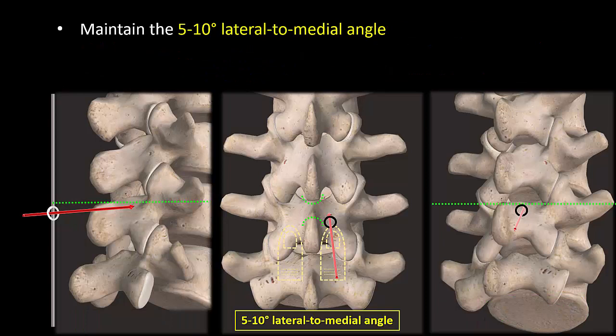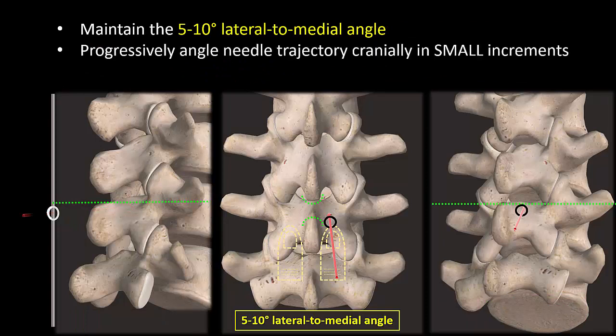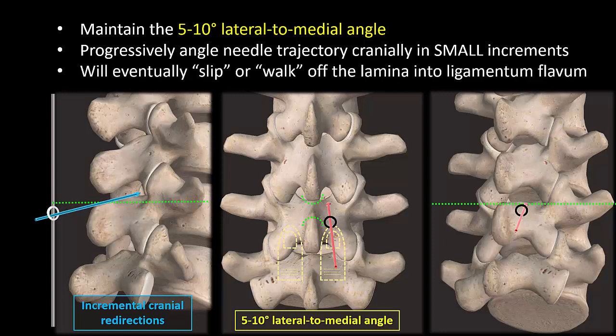The needle should be redirected in small increments, gradually increasing the cranial angle but maintaining the same lateral to medial angle. The needle tip will continue to make bony contact with the lamina, which feels like you are walking the needle tip up a wall — contact is always at the same depth. Eventually the needle walks off the edge of the lamina and slips into the interlaminar space. This is signaled by an ability to advance the needle deeper than during previous passes, and the characteristic feel of the ligamentum flavum will be encountered. From here, it is a simple matter to enter the epidural or intrathecal space as desired.